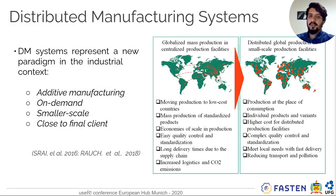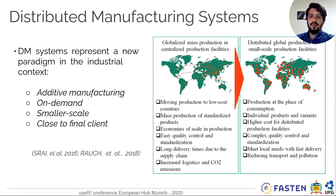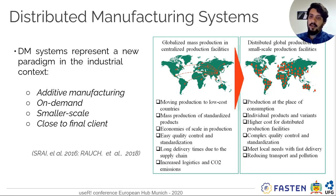As a brief introduction, distributed manufacturing systems represent a new paradigm in the industrial context. In the past and nowadays we have globalized mass production — we move production to low-cost countries and produce at higher scale — which results in long delivery times along global supply chains. This increases logistics costs and CO2 emissions. The new idea is to have distributed production in small production centers close to the final client, using additive manufacturing on a small scale. This kind of system is very complex to control.